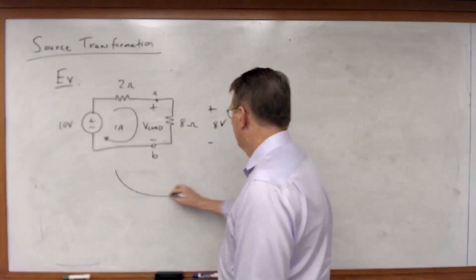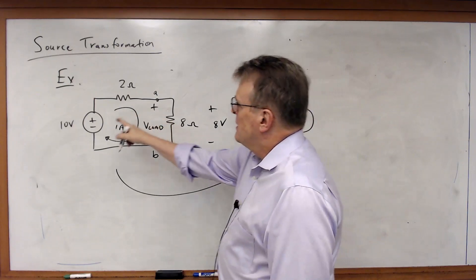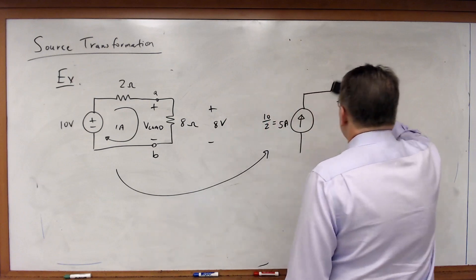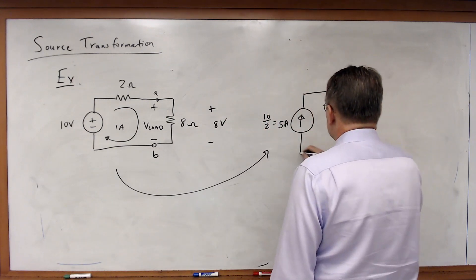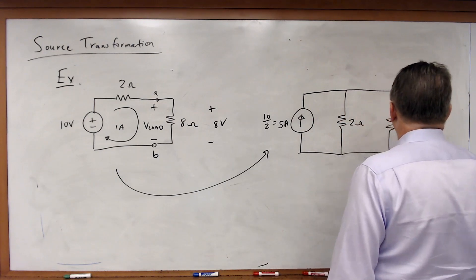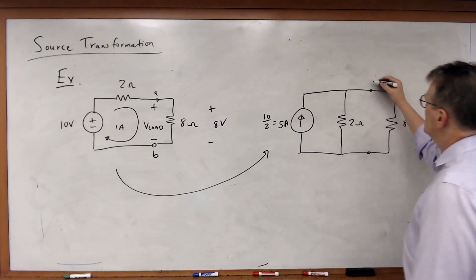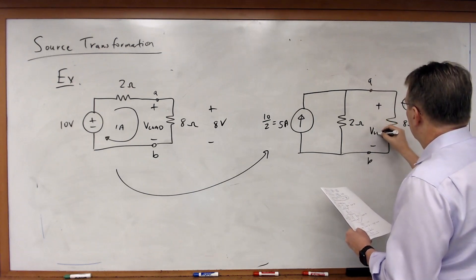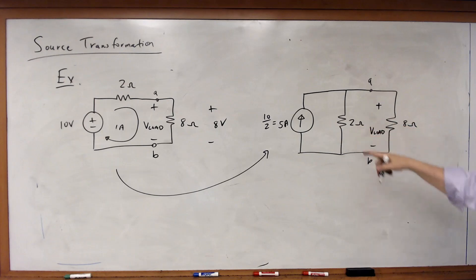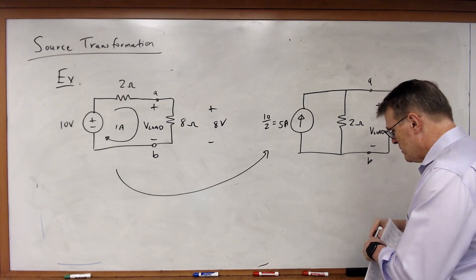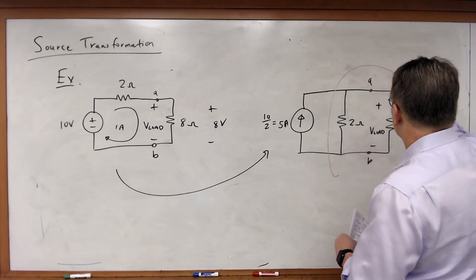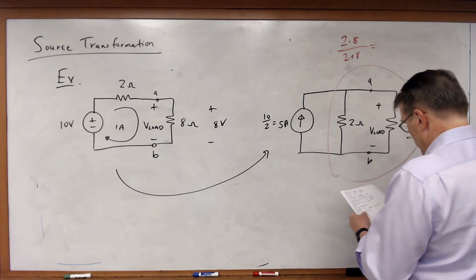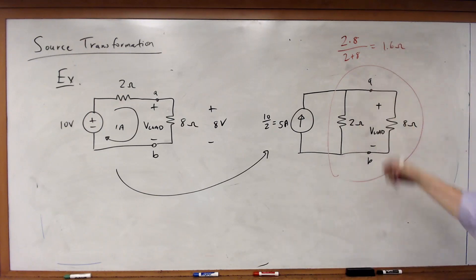Now let me transform it. 10 divided by 2 equals 5 amps. The 2 ohm resistor is now in parallel, and I've got the same 8 ohm resistor between nodes A and B. What's V-load? I take these two resistors in parallel: 2 times 8 divided by 2 plus 8 equals 1.6 ohms. In parallel those resistors are 1.6 ohms, with the same V-load between nodes A and B.